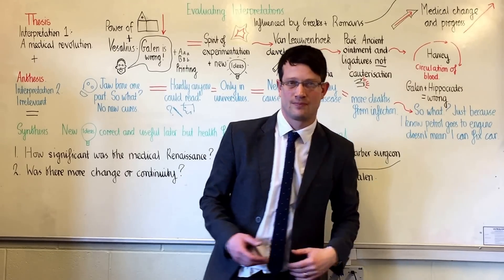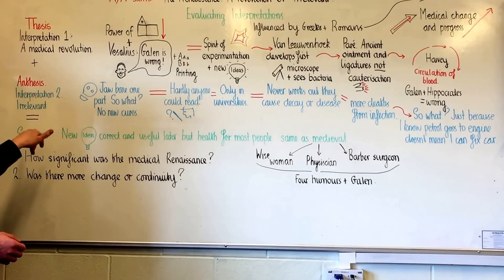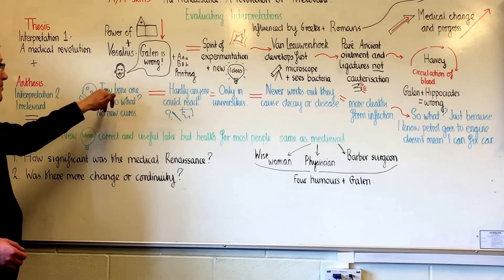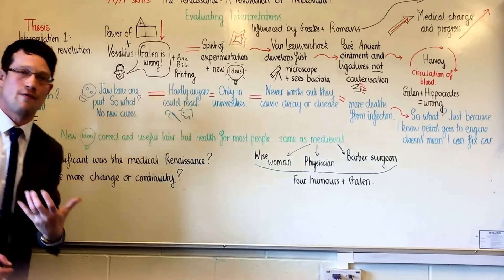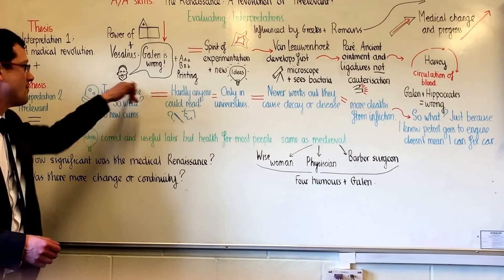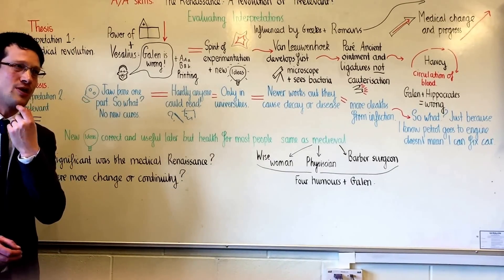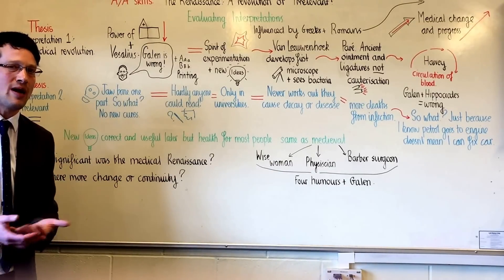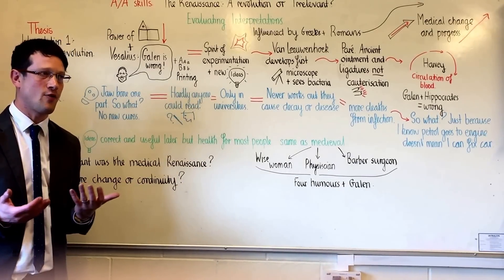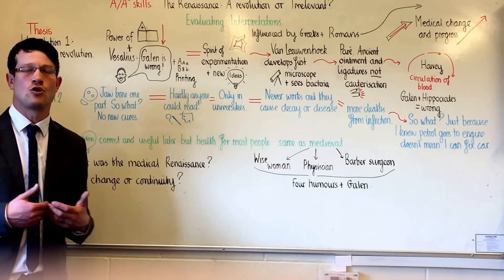But maybe it didn't. Let's look at the antithesis, which is interpretation two, which holds that the Renaissance was irrelevant. Let's start with this: Vesalius discovered that the human jawbone was in one part and not two — Galen made these mistakes because he was dissecting animals — but who cares if the human jawbone comes in one bone and not two? It doesn't lead to anybody getting better. As for printing, we've said this was a great discovery because new ideas were spread all over Europe, but hardly anyone could read at this point.